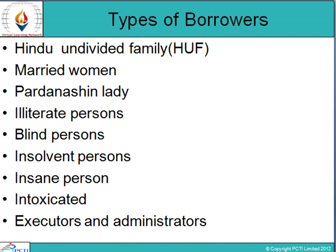Minors or lunatics cannot be declared insolvent. Then comes an insane person as a borrower — they are incapable of entering into a contract. On notice of lunacy, operations need to be stopped and the balance disposed of as per codes, discretions, and directions. Then comes an intoxicated person: contracts made by a person in a drunken state are void. Payment to an intoxicated person is to be made only after two independent witnesses confirm the condition of the person.